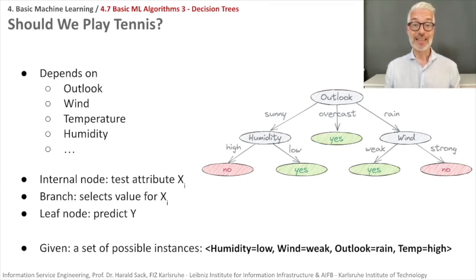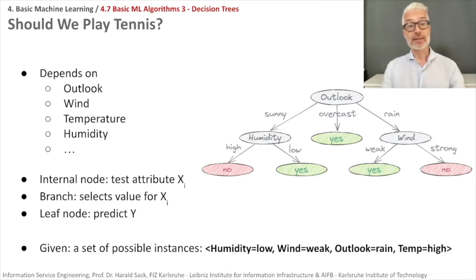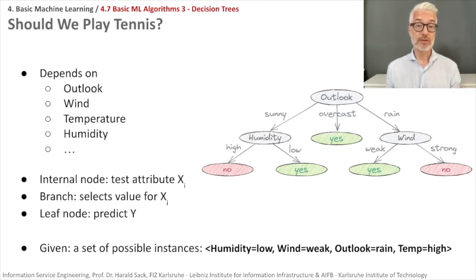These are the branches you create by selecting a specific value of a feature, and then you switch to one of the leaf nodes. These leaf nodes predict the outcome — the output function. For example, a set of possible instances might be: humidity is low, wind is weak, and outlook is rain. Following outlook=rain and wind=weak through the tree, you come up with the decision that it might be a good thing to play tennis.